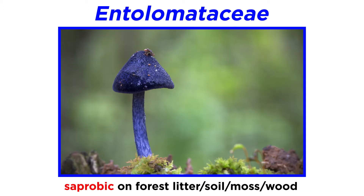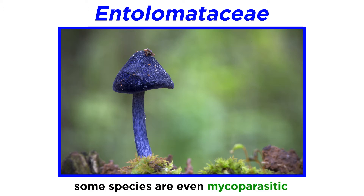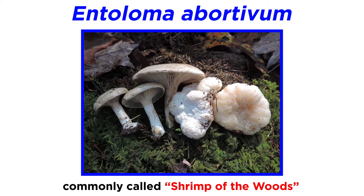Many species are saprobic, decomposing forest litter, soil, moss, or wood. Some species are mycoparasitic, meaning they will decompose other mushrooms. A notable mycoparasitic species in the family is Entoloma abortivum, commonly called shrimp of the woods.